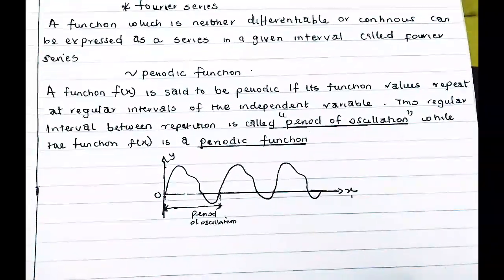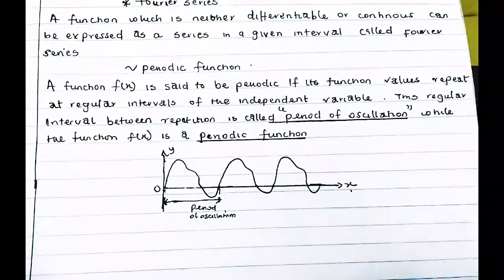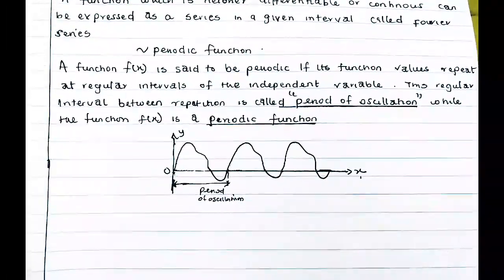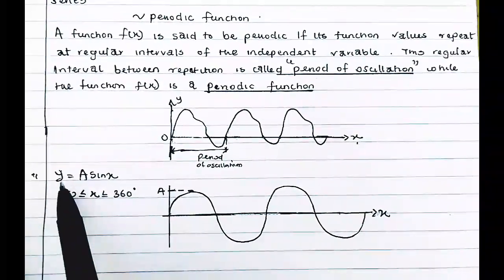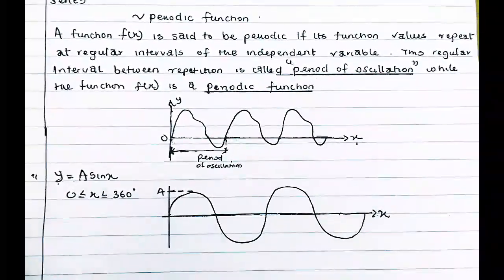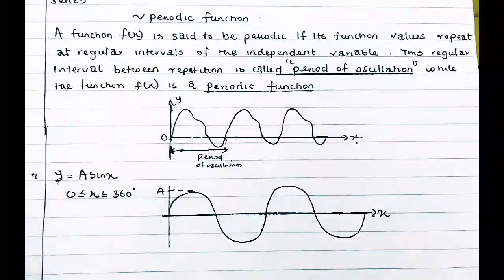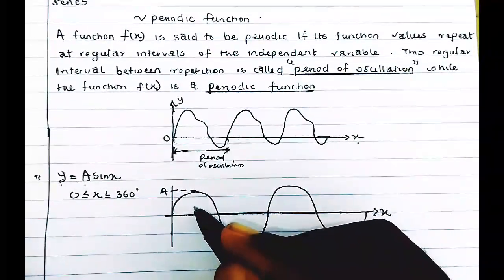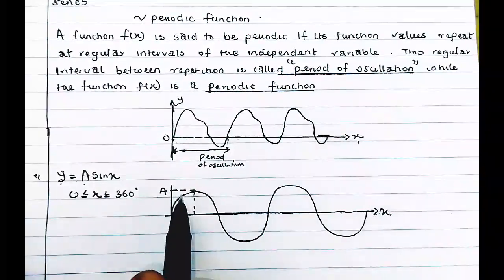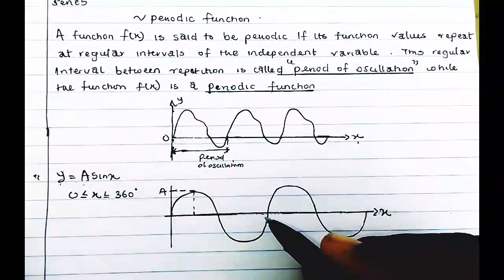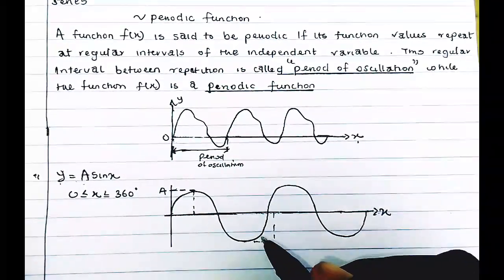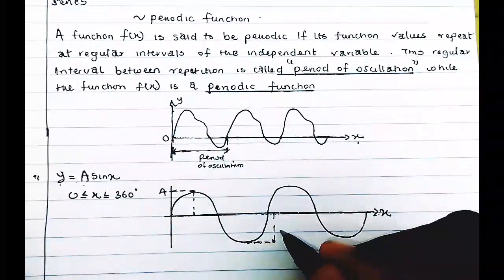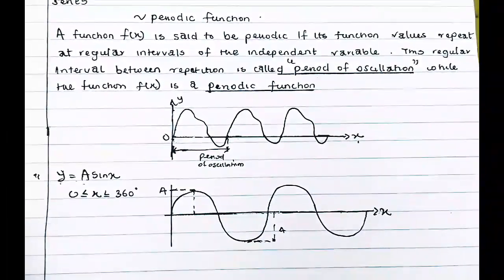Let's look at the graph of y = a·sin(x). The 'a' here is your amplitude, which is always the coefficient in front of sine or cosine. Your amplitude is your height — the peak going up and the crest going down. Both the peak and the crest represent your amplitude. So for y = a·sin(x), the amplitude is 'a'.